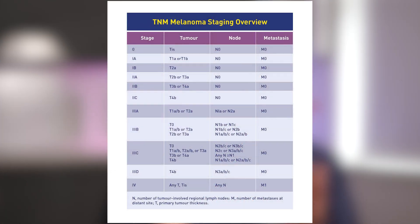Once the diagnosis confirms either melanoma or non-melanoma, it's about determining the stage of cancer to guide the most appropriate treatment plan. Melanoma is staged using a system called TNM, which considers factors like the tumour size, lymph node involvement, as well as metastasis — spread to other parts of the body.